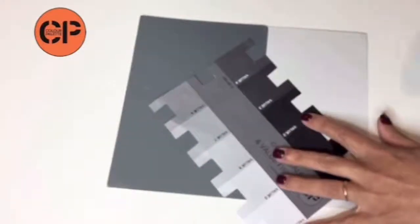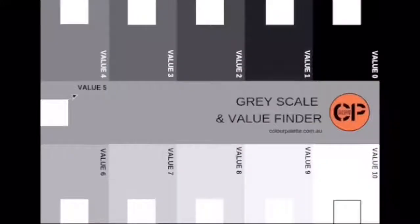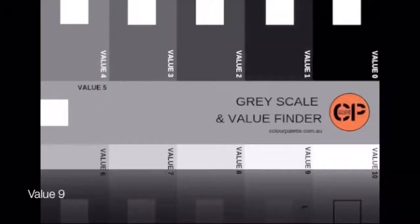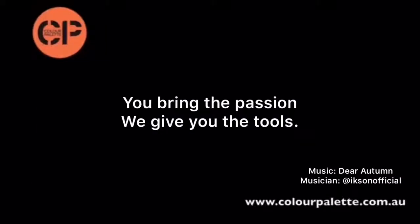And then you find the value of color number 2. In this case, we have a value 5. So our second color has a value 5 and our first color has a value 9, which means that we have a 40% tonal contrast between the two colors.